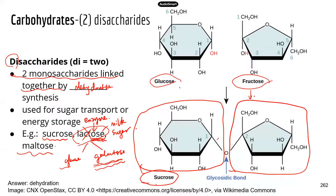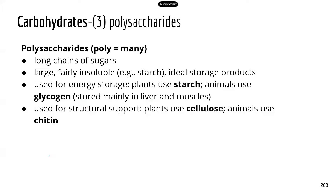Maltose is another common example of a disaccharide. When we digest starch in our mouth, the amylase in our saliva digests starch to disaccharide first — that disaccharide is maltose. Now polysaccharides are much bigger than mono- or disaccharides. They are long chains of sugars, with those sugars serving as the monomers. Because polysaccharides are much bigger, they are usually water insoluble — for example, starch molecules will settle to the bottom of water. These polysaccharides are ideal storage products for monosaccharides, which are the energy source for cells.